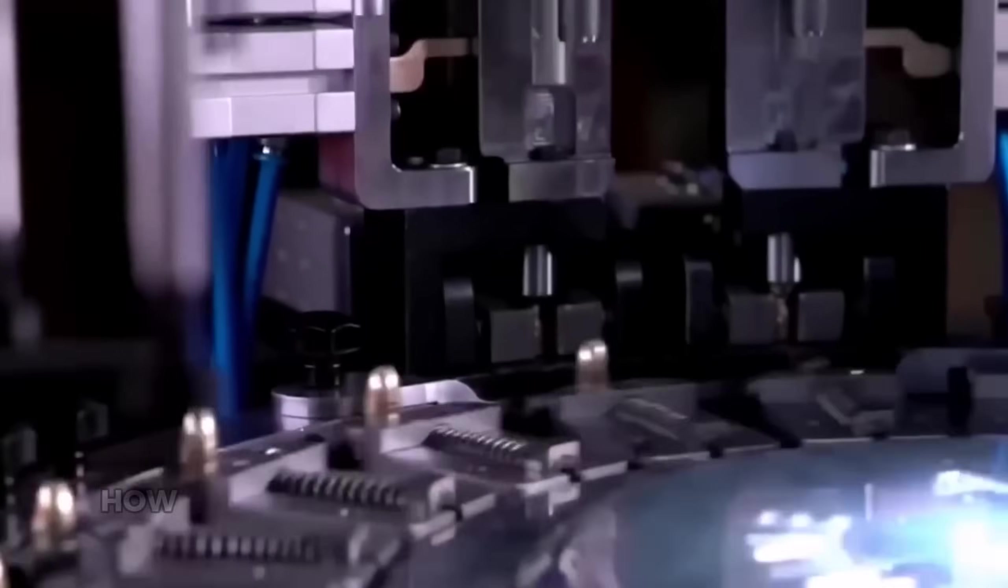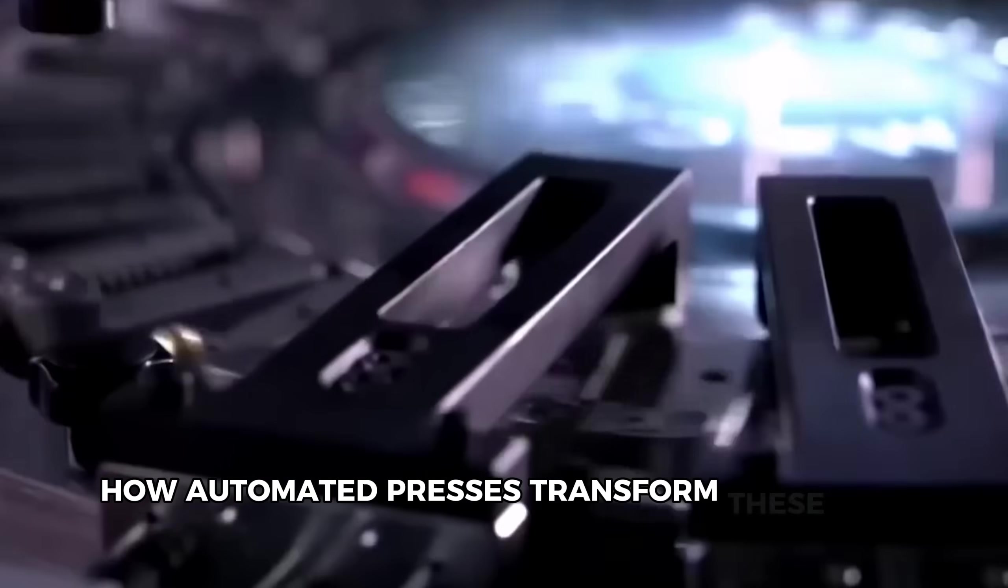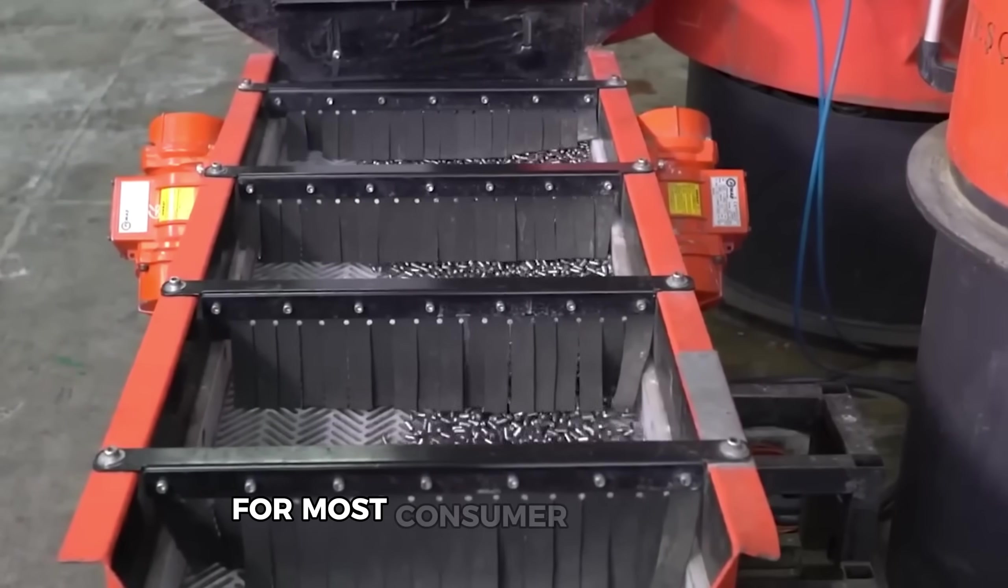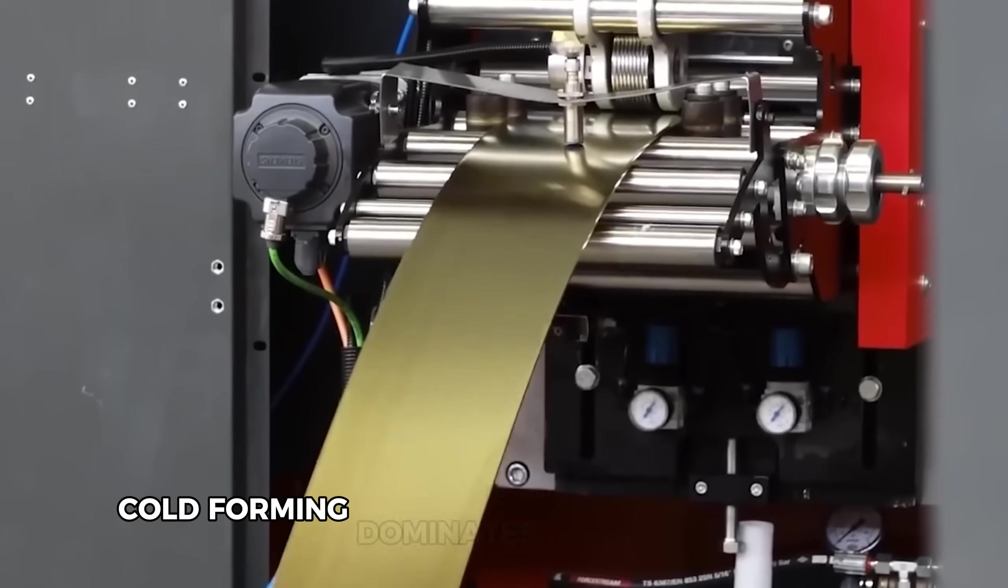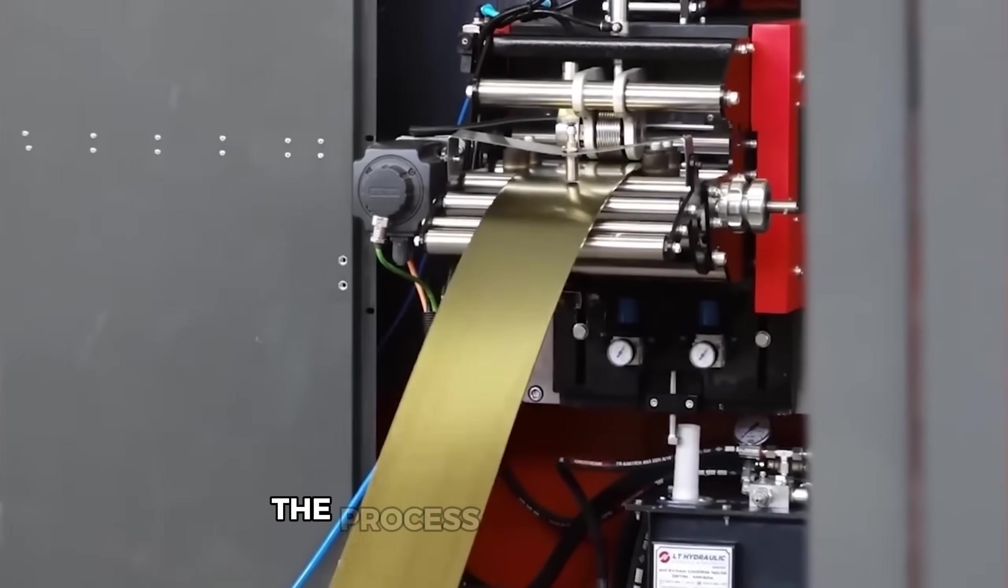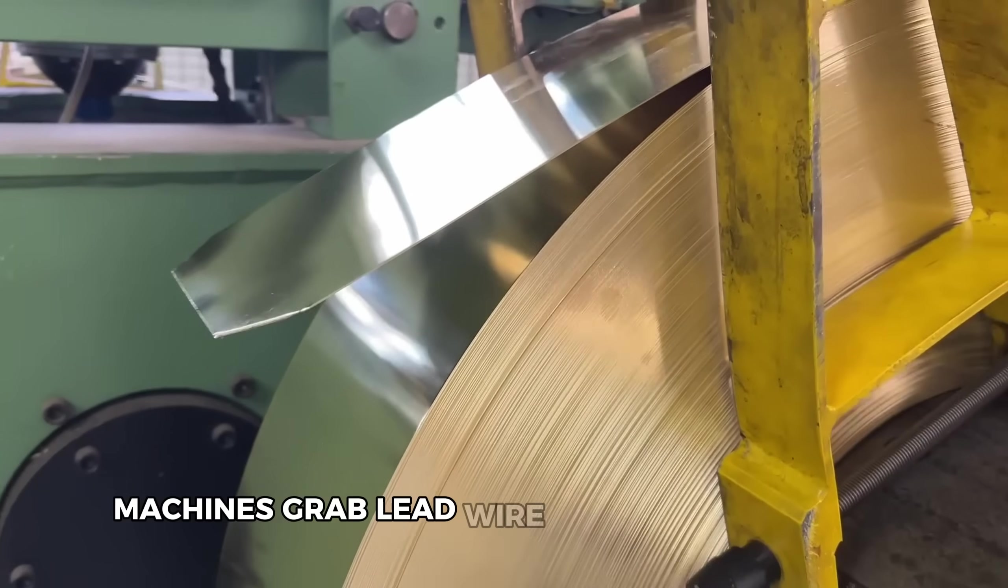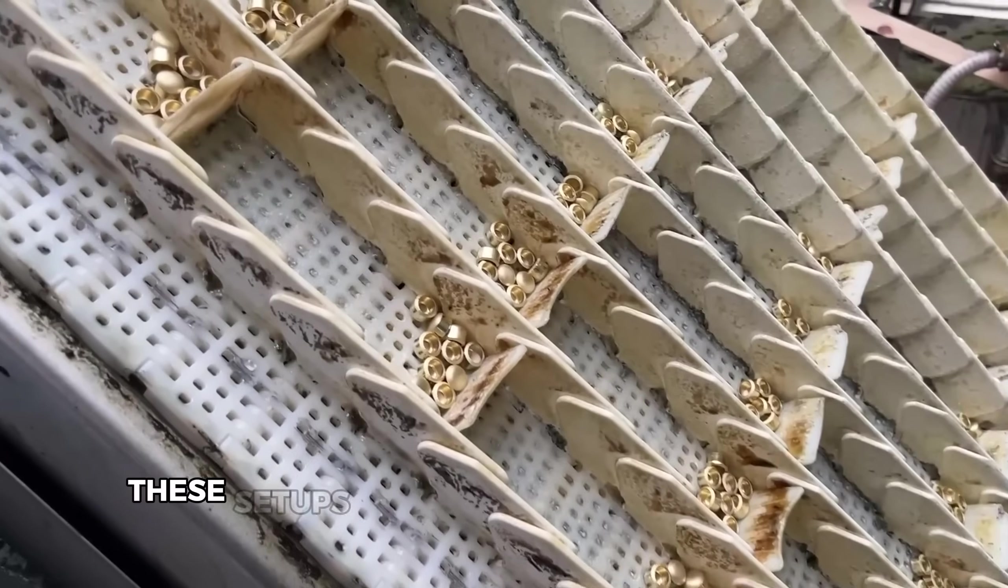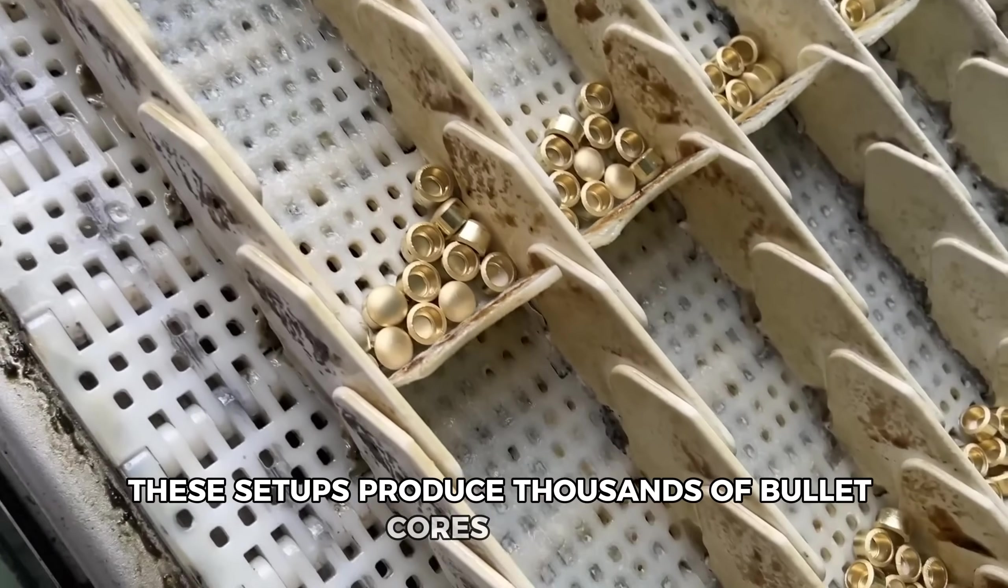Next, witness how automated presses transform these raw materials into precision-engineered cores. For most consumer ammunition, cold forming dominates the production line. The process is mesmerizing. Machines grab lead wire, cut precise lengths, and compress it into bullet shapes through a series of dies. These setups produce thousands of bullet cores hourly with remarkable consistency.